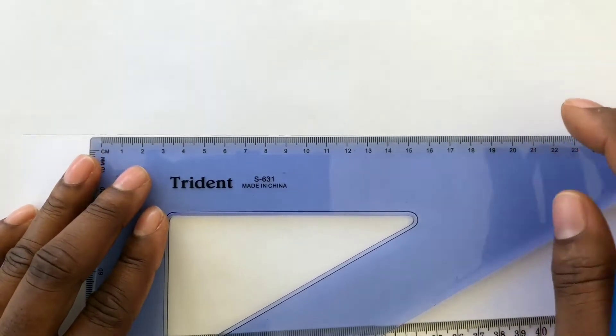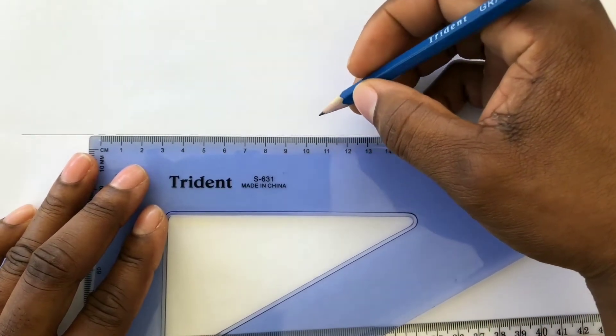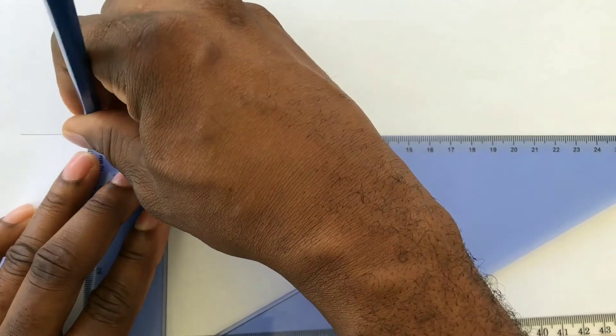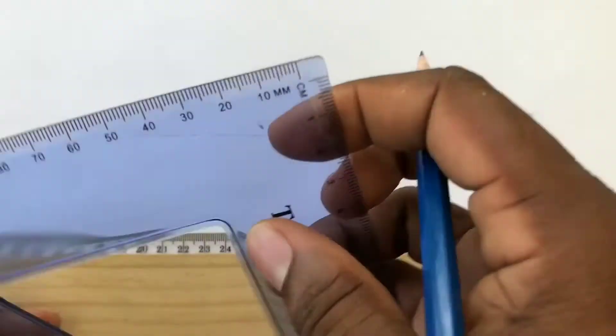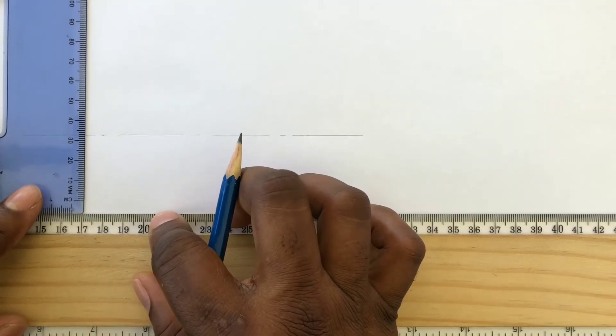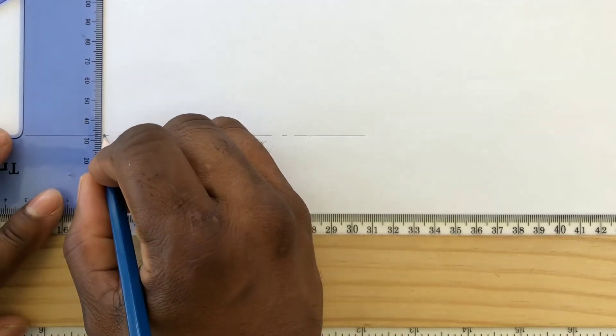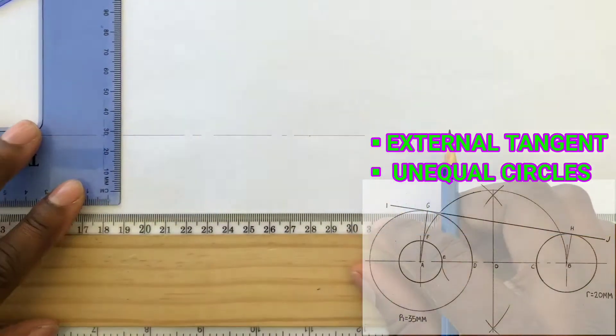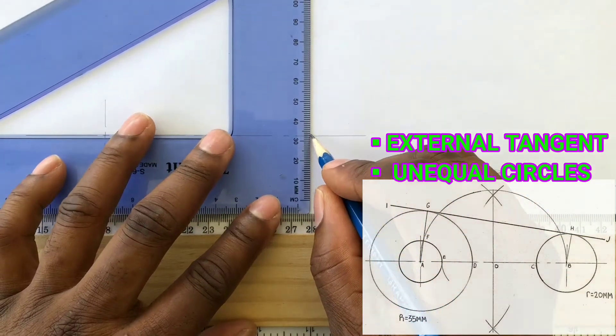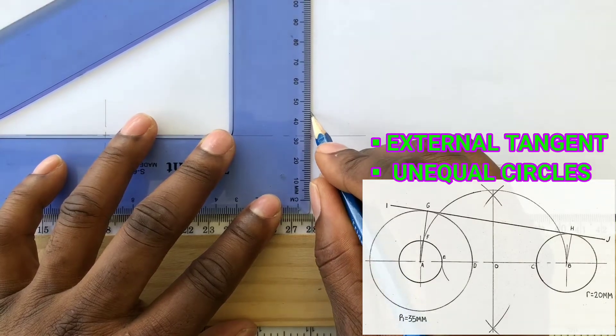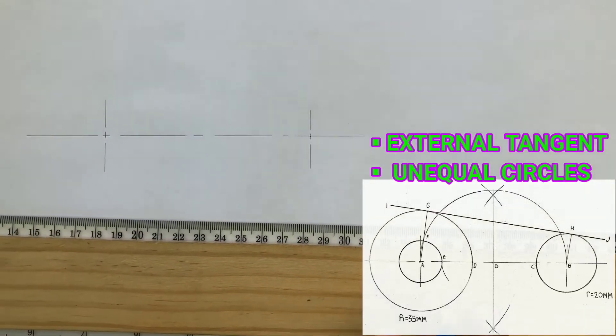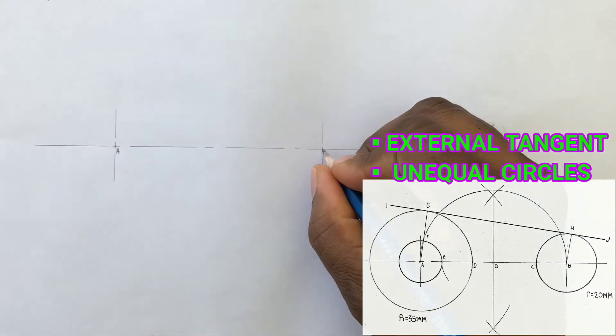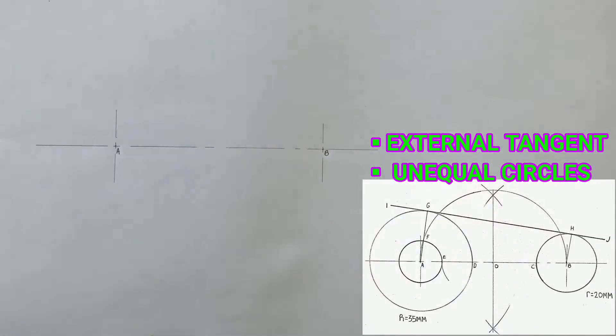We will now identify 100 millimeters on our center line. From these points we will draw vertical center lines using our set square and our T-square. These intersections will be labeled A and B. AB is 100 millimeters.